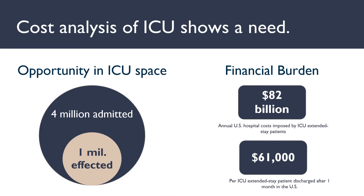Upon a detailed statistical analysis of the ICU, it shows a great opportunity and market for our products. The ICU has a high prevalence of atrophy with one in four patients diagnosed, which constitutes one million patients annually in the US. This has huge financial implications as well, with an $82 billion annual hospital cost imposed by extended stay ICU patients, as well as big financial implications for the patients, with $61,000 for a patient being discharged after one month in the ICU on average.